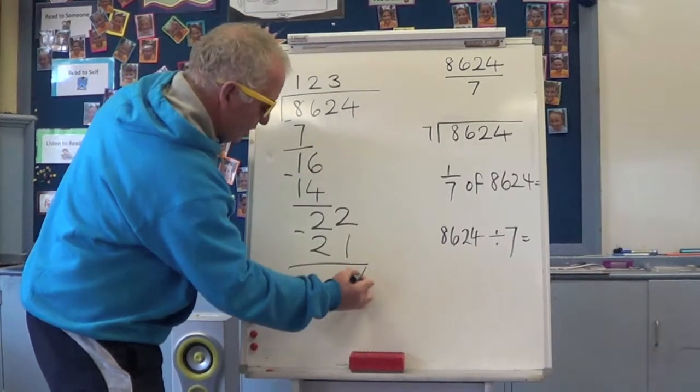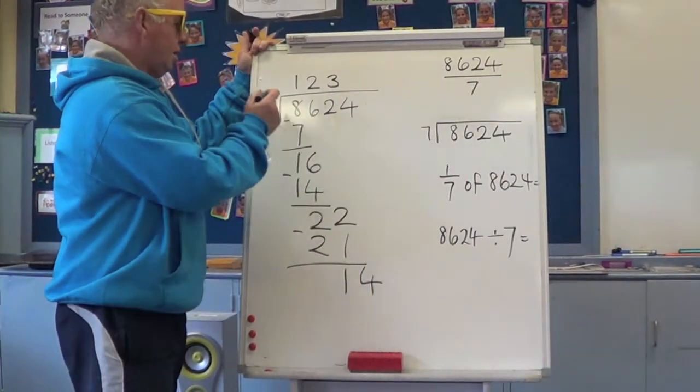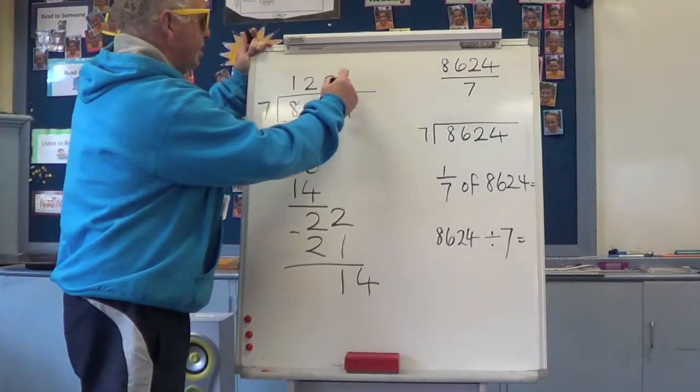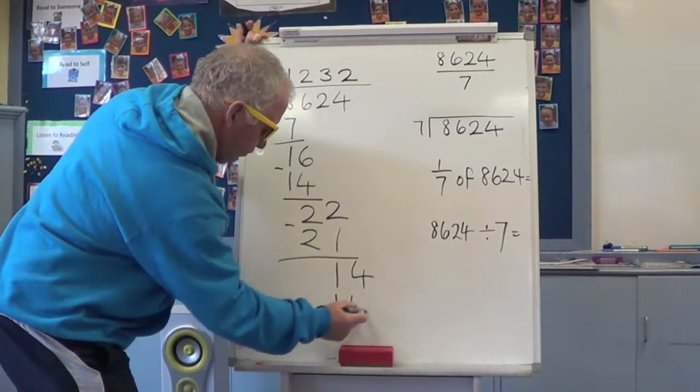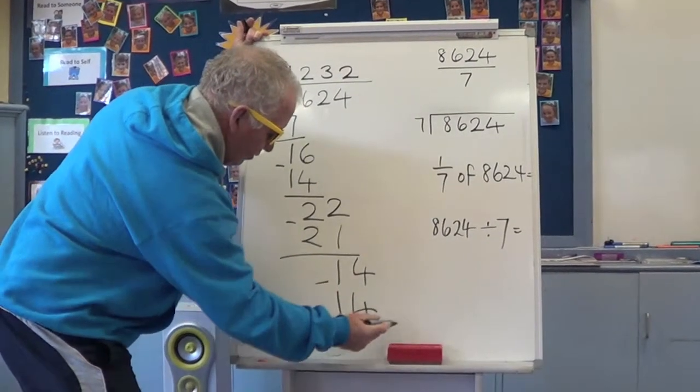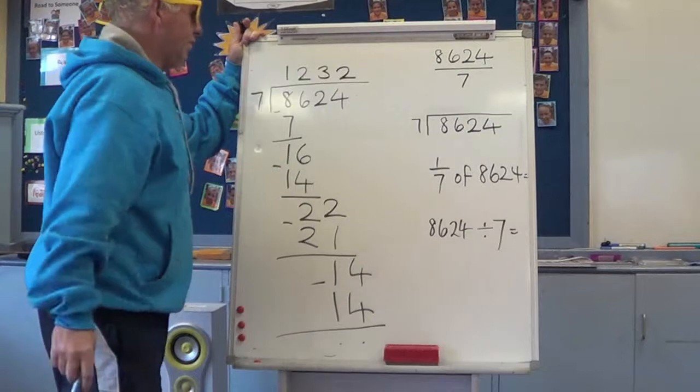Bring down the four ones. 14 shared into 7 groups. They each get 2. So that's 2 multiplied by 7 is 14. Take it away. And we have nothing left over.